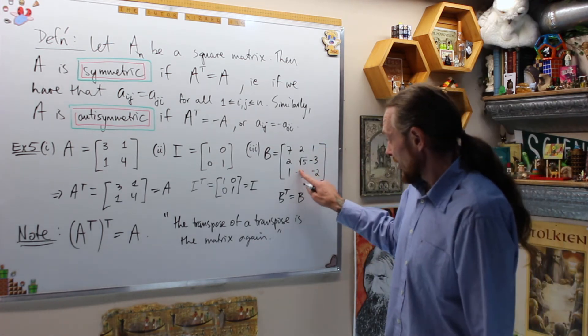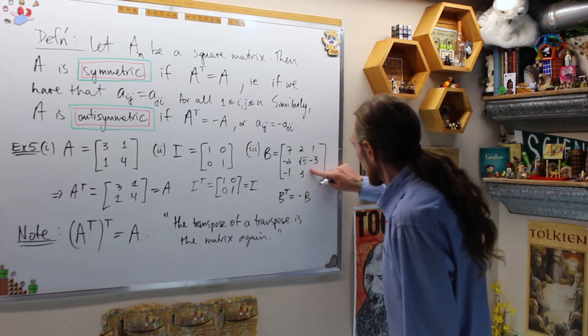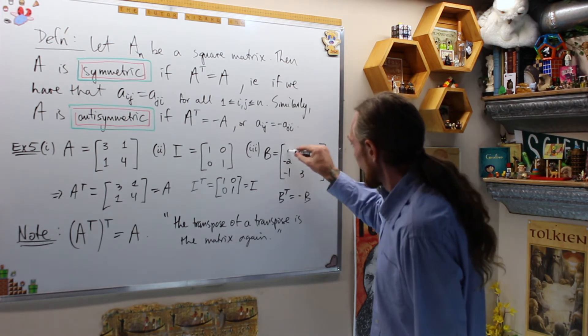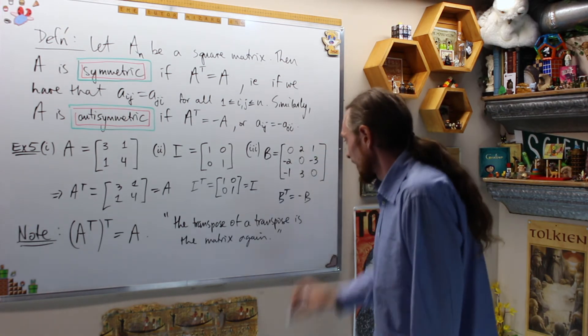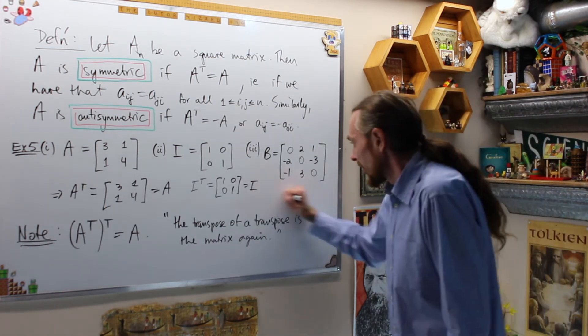If you want anti-symmetric, then we do this. If you're cooking them up, cook them up correctly, then B transpose is equal to negative B. How do we know? Check this.